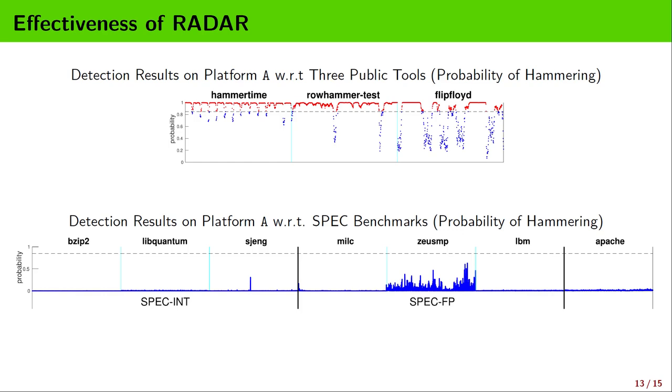We also perform more evaluations against the three well-known tools that are publicly available for demonstrating Rowhammer attacks. The results still show the effectiveness of our RADAR. The false positive rate of our RADAR detection is also extremely low, as illustrated by the evaluation results in terms of the SPEC 2006 benchmarks.